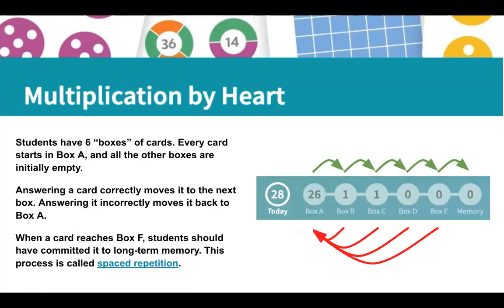Students have six boxes of cards. Every card starts in Box A, and all the other boxes are initially empty. Answering a card correctly moves it to the next box — those green arrows move the card forward. Answering it incorrectly moves it back to Box A, causing them to repeat it. When a card reaches Box F, the student should have committed it to long-term memory — that's why Box F is labeled Memory. This process is called spaced repetition.